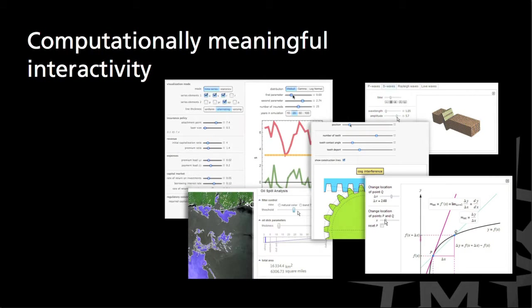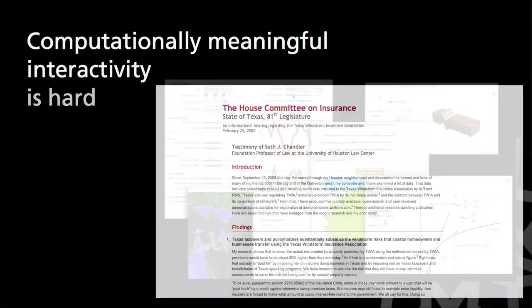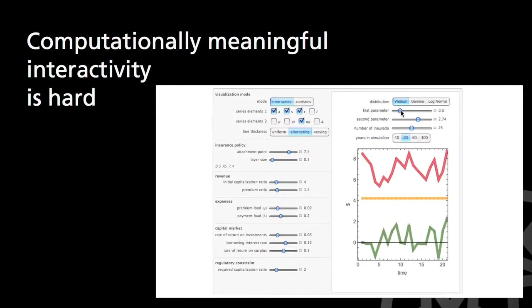Textbooks, scientific publications, engineering documents, things like that need what we call computational interactivity. And by this I mean interactivity where the interesting part, the important part, is the underlying mathematical model or simulation or formula. Creating this kind of deep computational interactivity is hard.